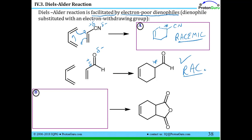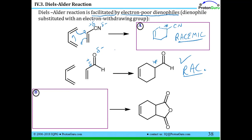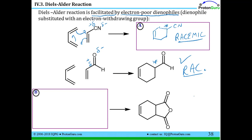Sometimes, instead of being given the two starting materials and asked for the product, you're given the product and asked what starting materials you need — which is more like real-world research. If you see that a compound has a cyclohexene in it, you think: the Diels-Alder reaction is really good at easily making cyclohexenes. Then you have to think backwards to figure out which starting materials have to go together to make this particular cyclohexene.